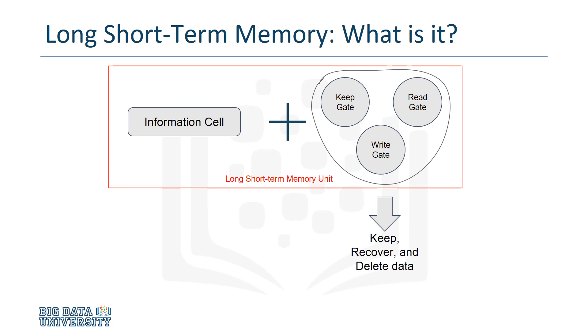The LSTM units are composed of four main elements. The memory cell, or information cell, is responsible for holding data, and the three logistic gates define the flow of data inside the LSTM.